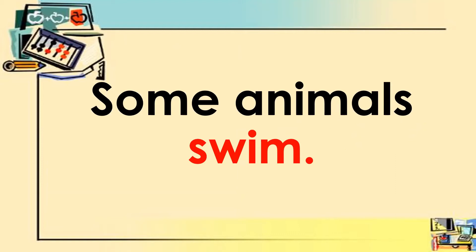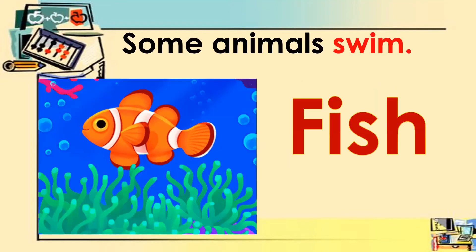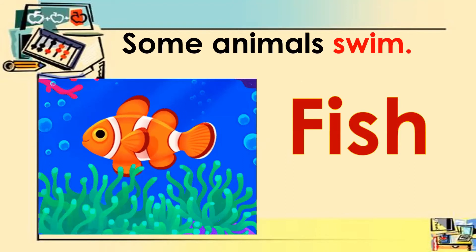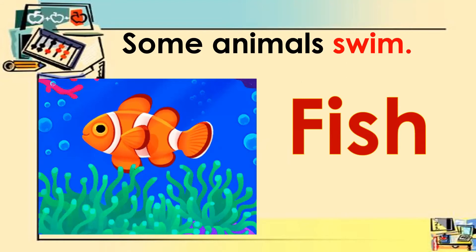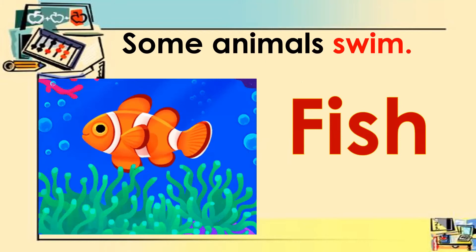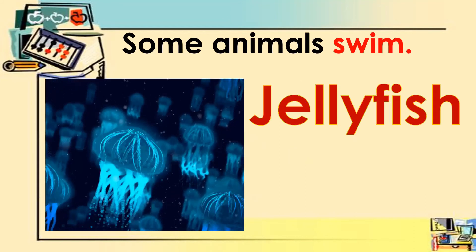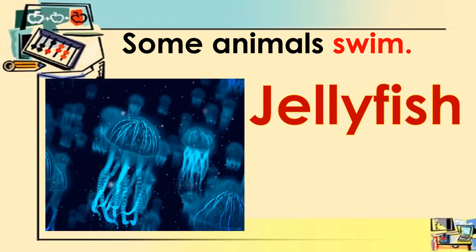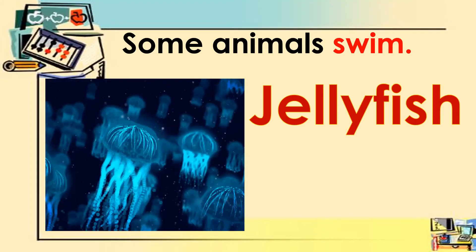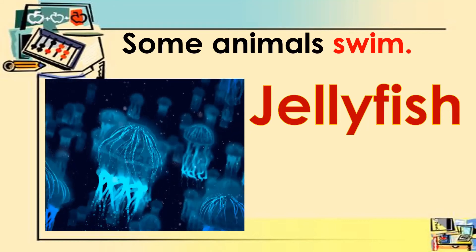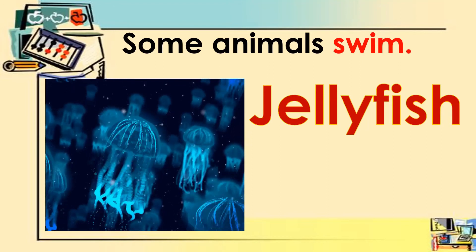Some animals swim. Let's look at some animals that swim. The first one we have fish — the fish swims. Let's spell the word fish: F-I-S-H, fish. Okay. Next example of an animal that swims is jellyfish. Let's spell the word jellyfish: J-E-L-L-Y-F-I-S-H, jellyfish. Great job.